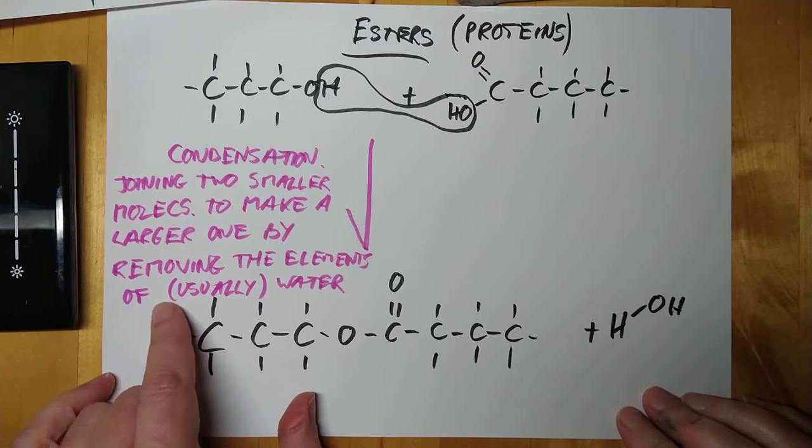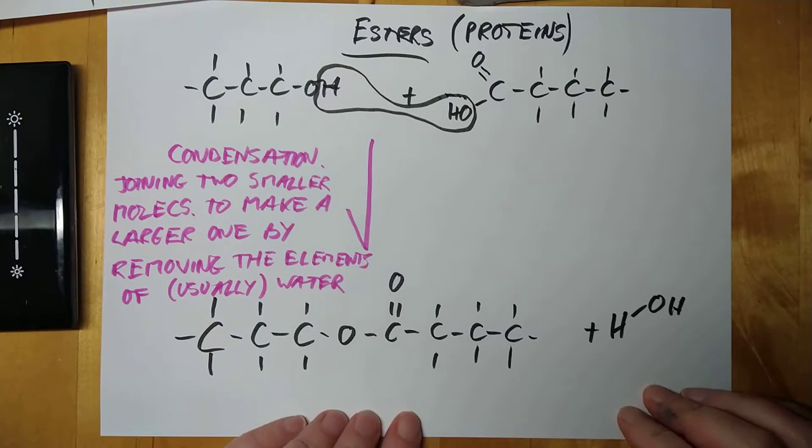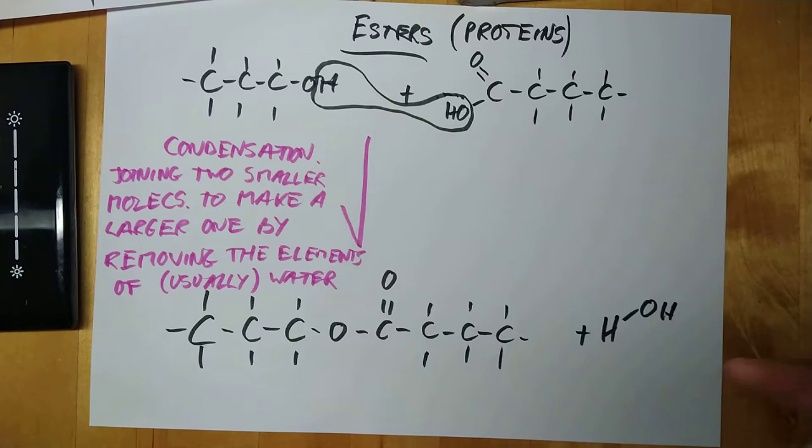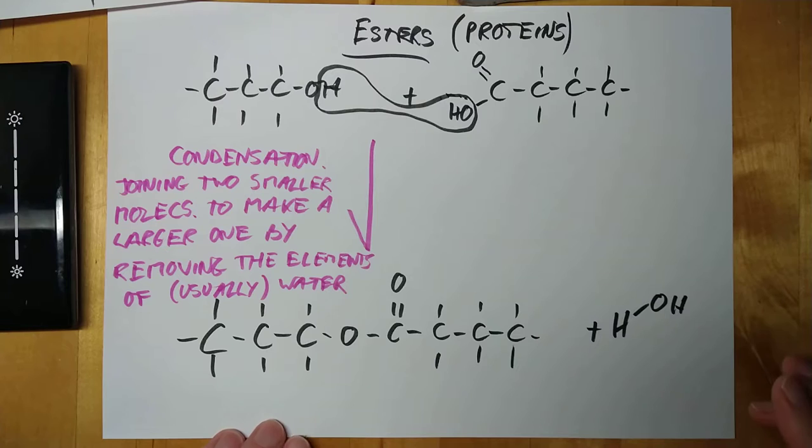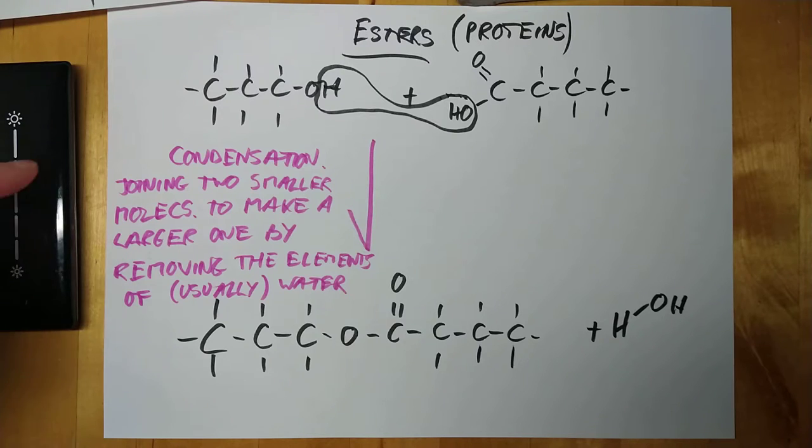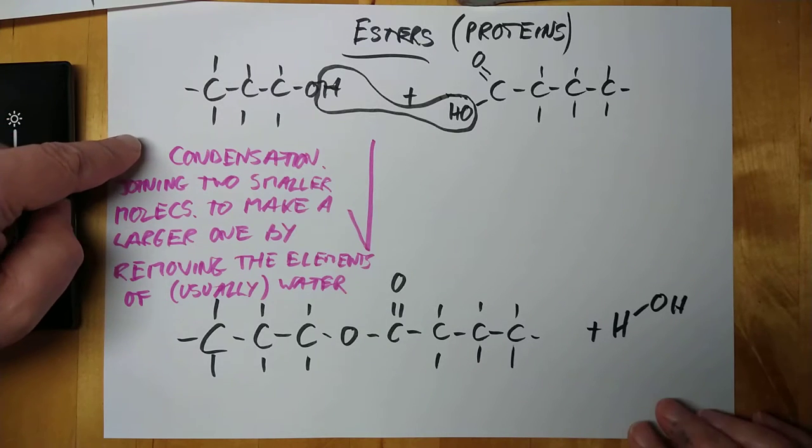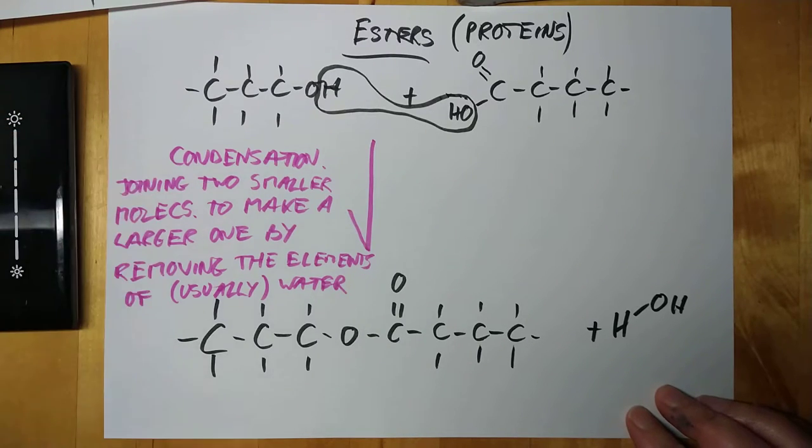So, as I said here, condensation is joining two smaller molecules to make a larger one by removing the elements of, usually, water. You know, put a weasel word in there. However, if they wanted you to remove something else other than H and OH, they'd probably do it in a problem-solving context. Then they'd have to give you an example of how it can be done.